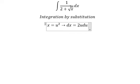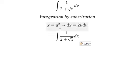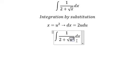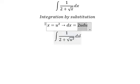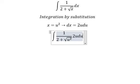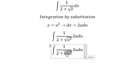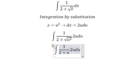Now we substitute into the integral. We change x to u², so √x becomes u. This gives us the integral of 1 over (2+u) times 2u du, which simplifies to 2 times the integral of u over (2+u) du.